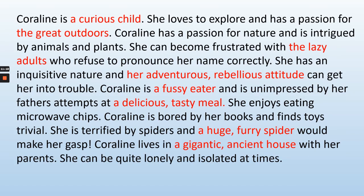Let's look back at this text. Coraline is a curious child. She loves to explore and has a passion for the great outdoors. Coraline has a passion for nature and is intrigued by animals and plants. She can become frustrated with the lazy adults who refuse to pronounce her name correctly. She has an inquisitive nature and her adventurous, rebellious attitude can get her into trouble. Coraline is a fussy eater and is unimpressed by her father's attempts at a delicious, tasty meal. She enjoys eating microwave chips. Coraline is bored by her books and finds toys trivial. She is terrified by spiders and a huge, furry spider would make her gasp. Coraline lives in a gigantic ancient house with her parents. She can be quite lonely and isolated at times. You can see where expanded noun phrases have been added: a curious child, the great outdoors, a fussy eater, a delicious tasty meal, a huge furry spider. It's just writing what we know about Coraline so far — it's only the first chapter.